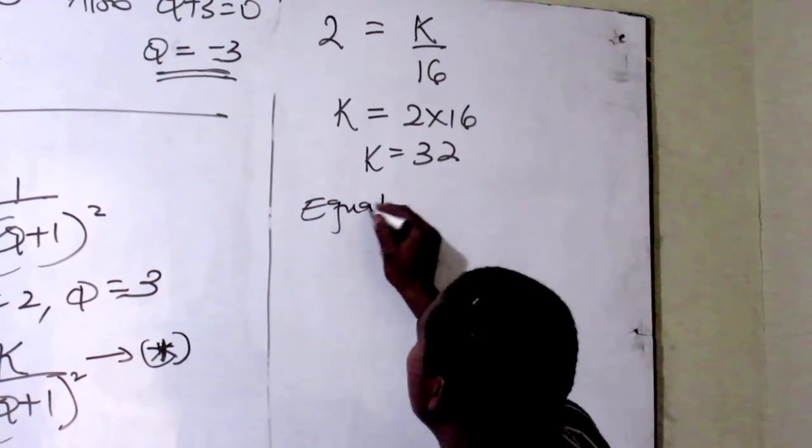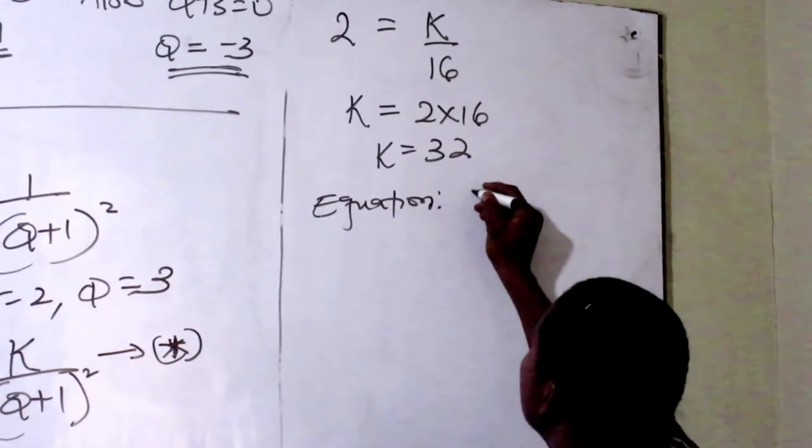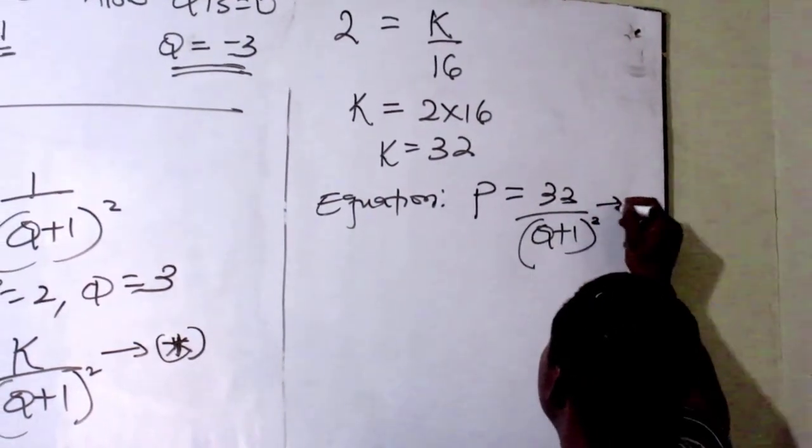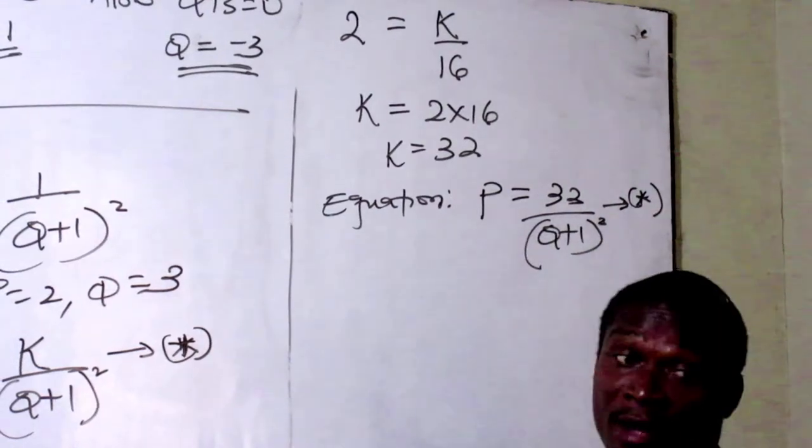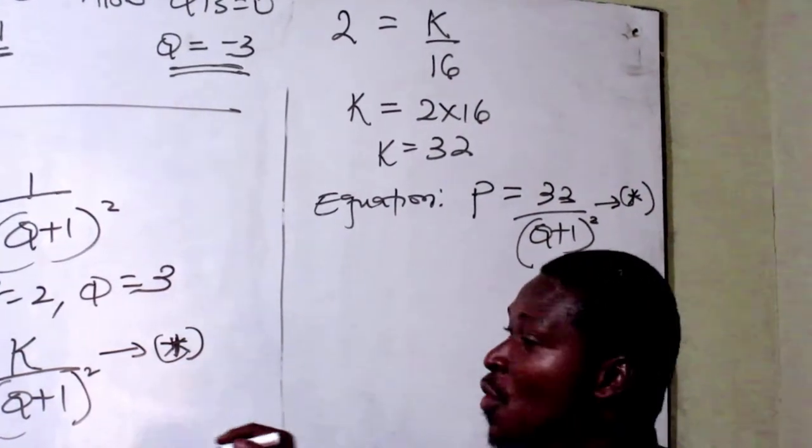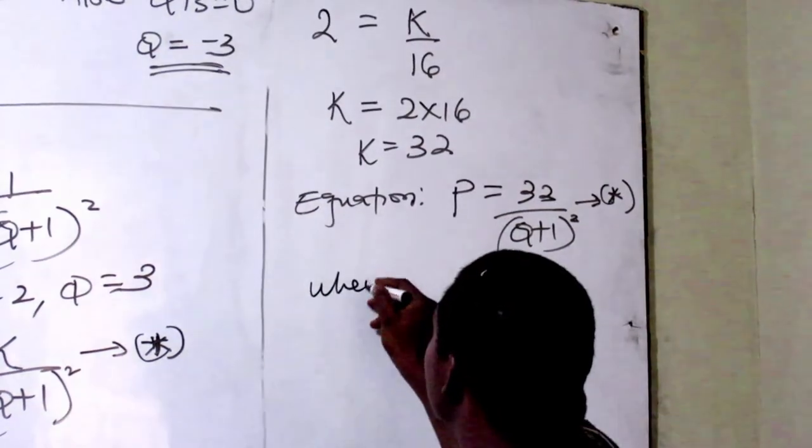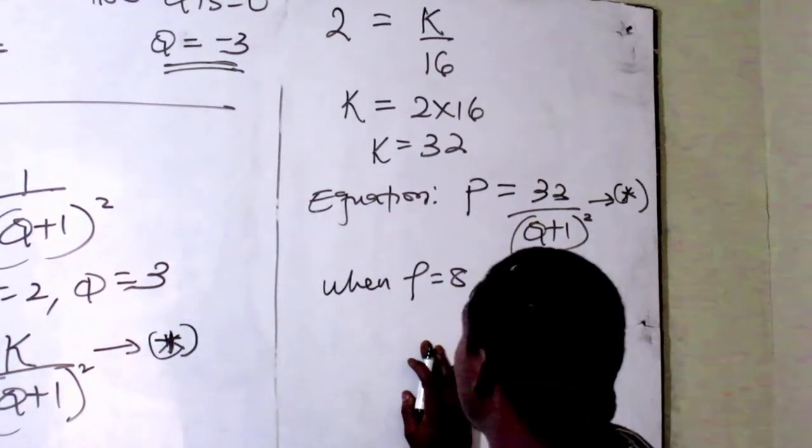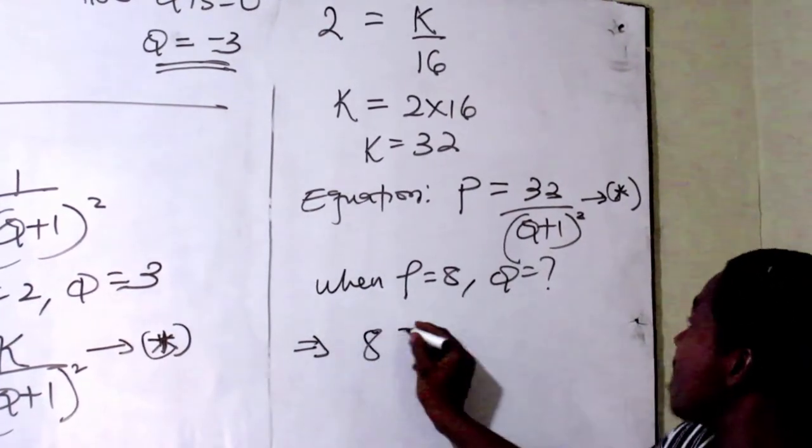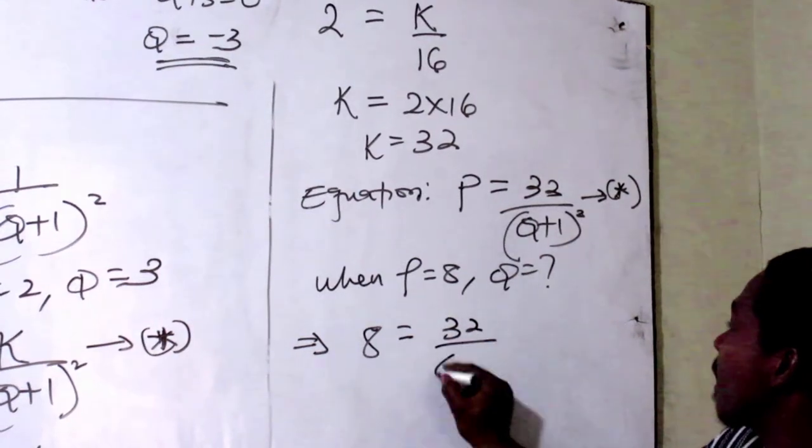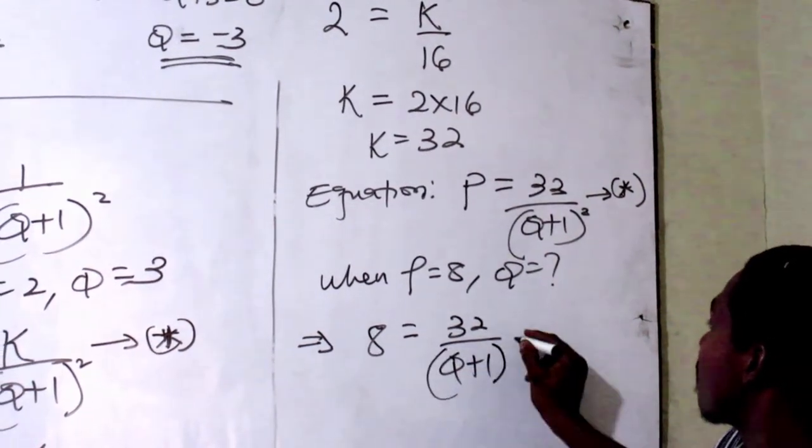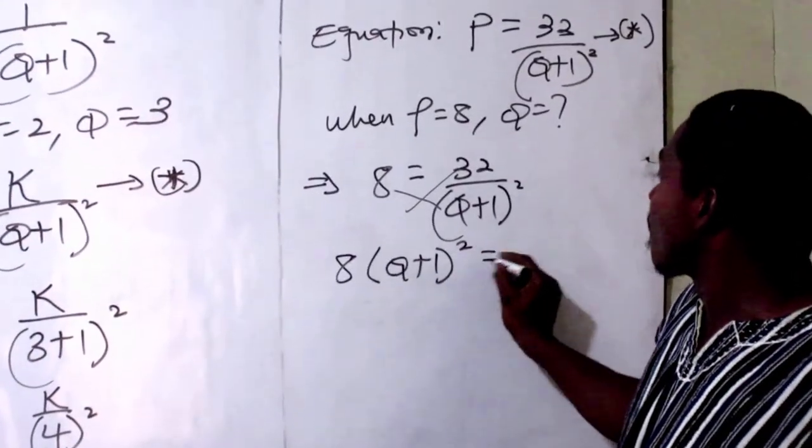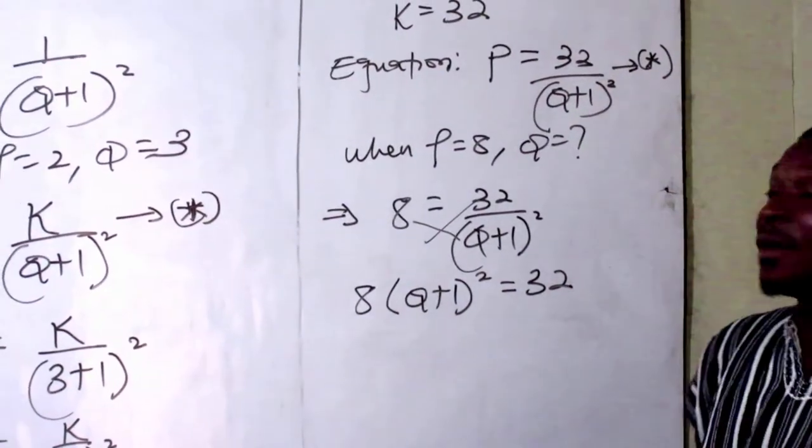So my equation reduces to something like this: P equals 32 over (KL plus 1) squared. Now this equation, star. When P is 8, KL we don't know. Let's see what will happen here. This implies 8 equals 32 over (KL plus 1) squared. So I cross multiply.